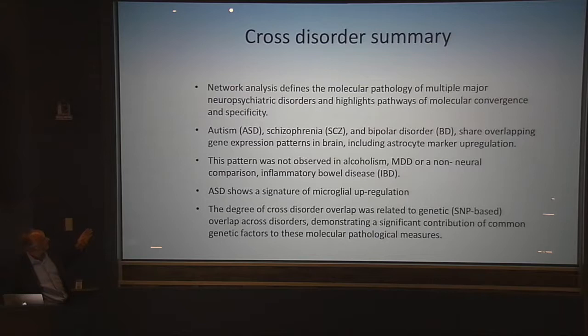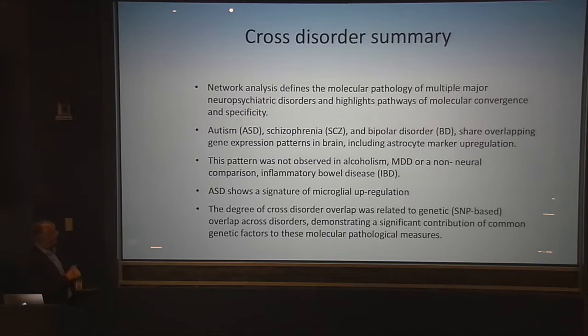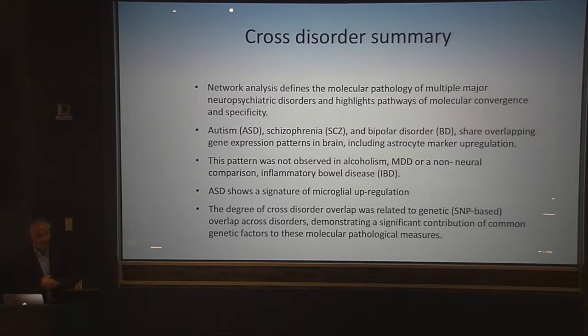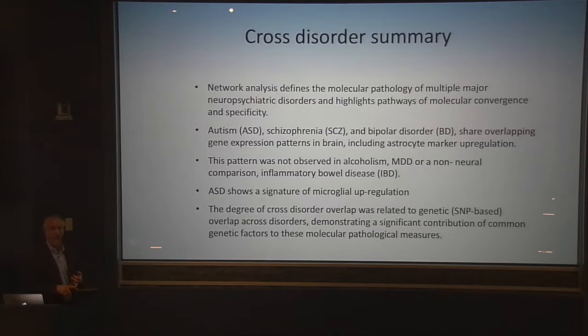Cross-disorder summary: we've defined the molecular pathology of multiple major neuropsychiatric disorders. Autism, schizophrenia, and bipolar share overlapping gene expression patterns including astrocyte upregulation, but autism shows a specific signature of microglia upregulation. The degree of cross-disorder overlap is strikingly related to the genetic overlap among disorders, demonstrating a significant contribution of common genetic factors to these molecular pathologic measures. Outstanding questions include understanding what cell types this comes from, whether we can recapitulate this in model systems, and whether altering excitation-inhibition balance can create these patterns.